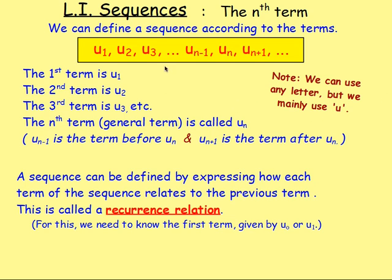We started looking at a formula for the nth term, and we found that you can define a sequence according to the terms u1, u2, u3, working all the way up to some unknown value un. The term after that would be un plus one, and the term before that would be un minus one.